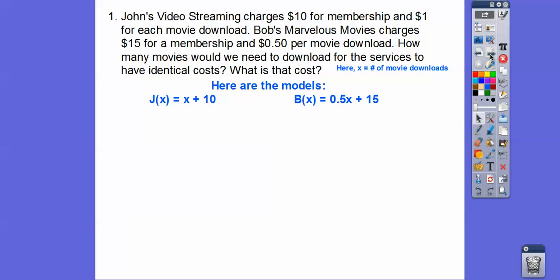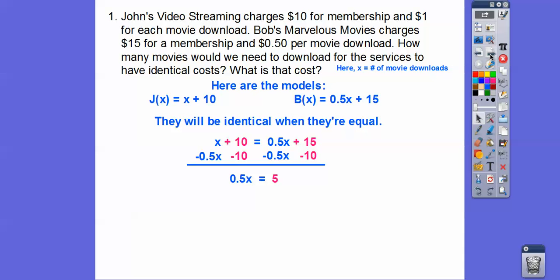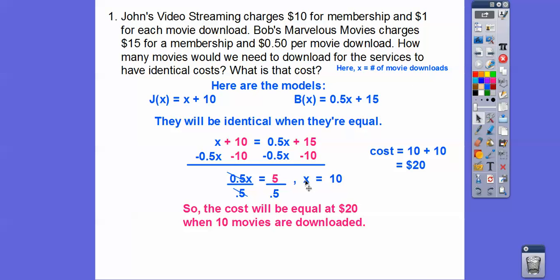So here's the models for our thing right here. So they'll be identical when they're equal to each other. So let's go ahead and solve for X. And we subtract 10 from both sides and subtract 0.5X from both sides. Then divide by 0.5, we get X equals 10. Remember, it's the number of movies. So after 10 movies.